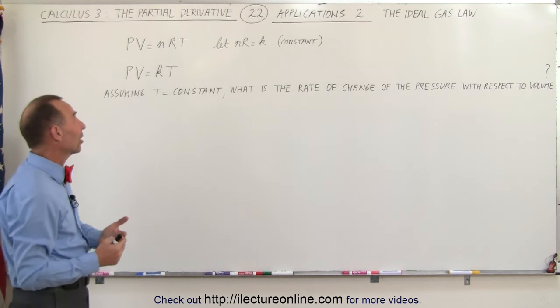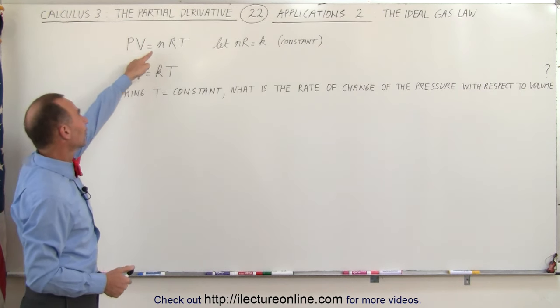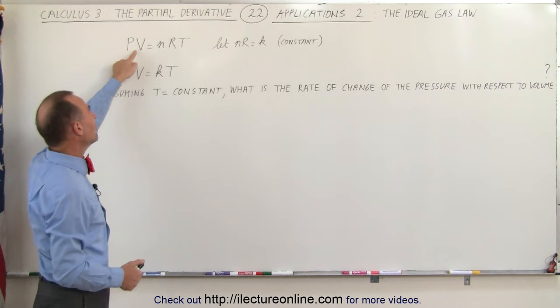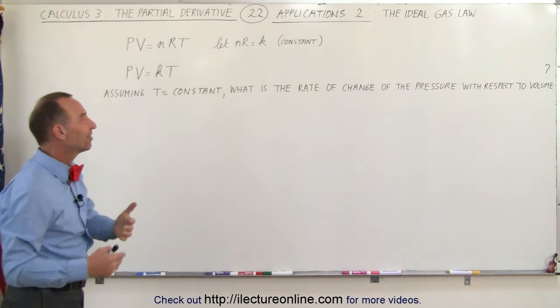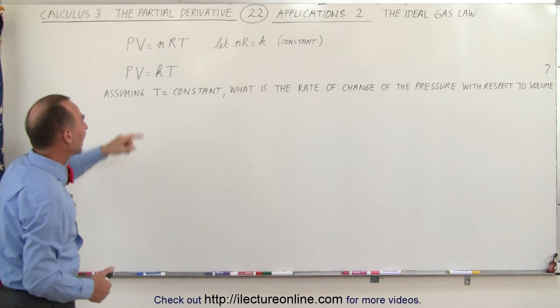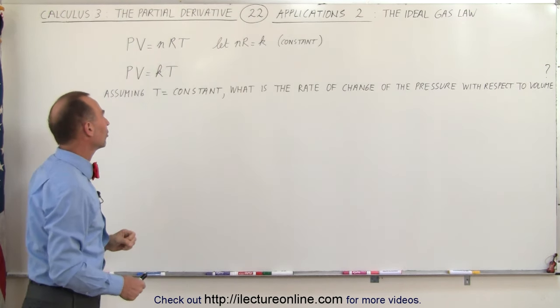Let's use it for the ideal gas law, which says that PV equals nRT. Now PV and T, the pressure, the volume, and the temperature, are the state variables of the gas. N is the number of moles, and R is the gas constant.